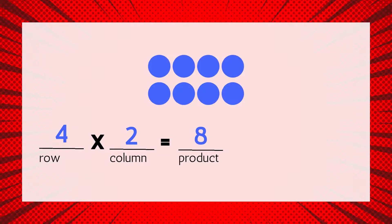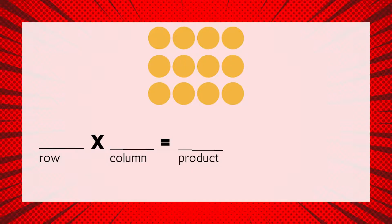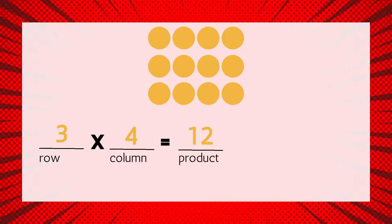Let's try another example. How many rows are in this array? I see three rows. How many columns are there? I see four columns. How many circles are there in all? Let's count by fours: 4, 8, 12. There are 12 circles in all — that's our product. Now we can write a multiplication equation to match the array: 3 times 4 equals 12.